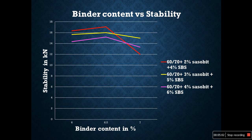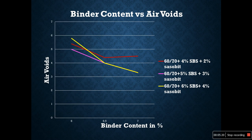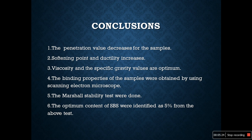The binder content graph shows a gradual decrease for 60/70 plus 2% SBS and plus 4% SBS mixes. The binder content versus bulk density graph shows it reaching a gradual value of 2.43 for both mixes.